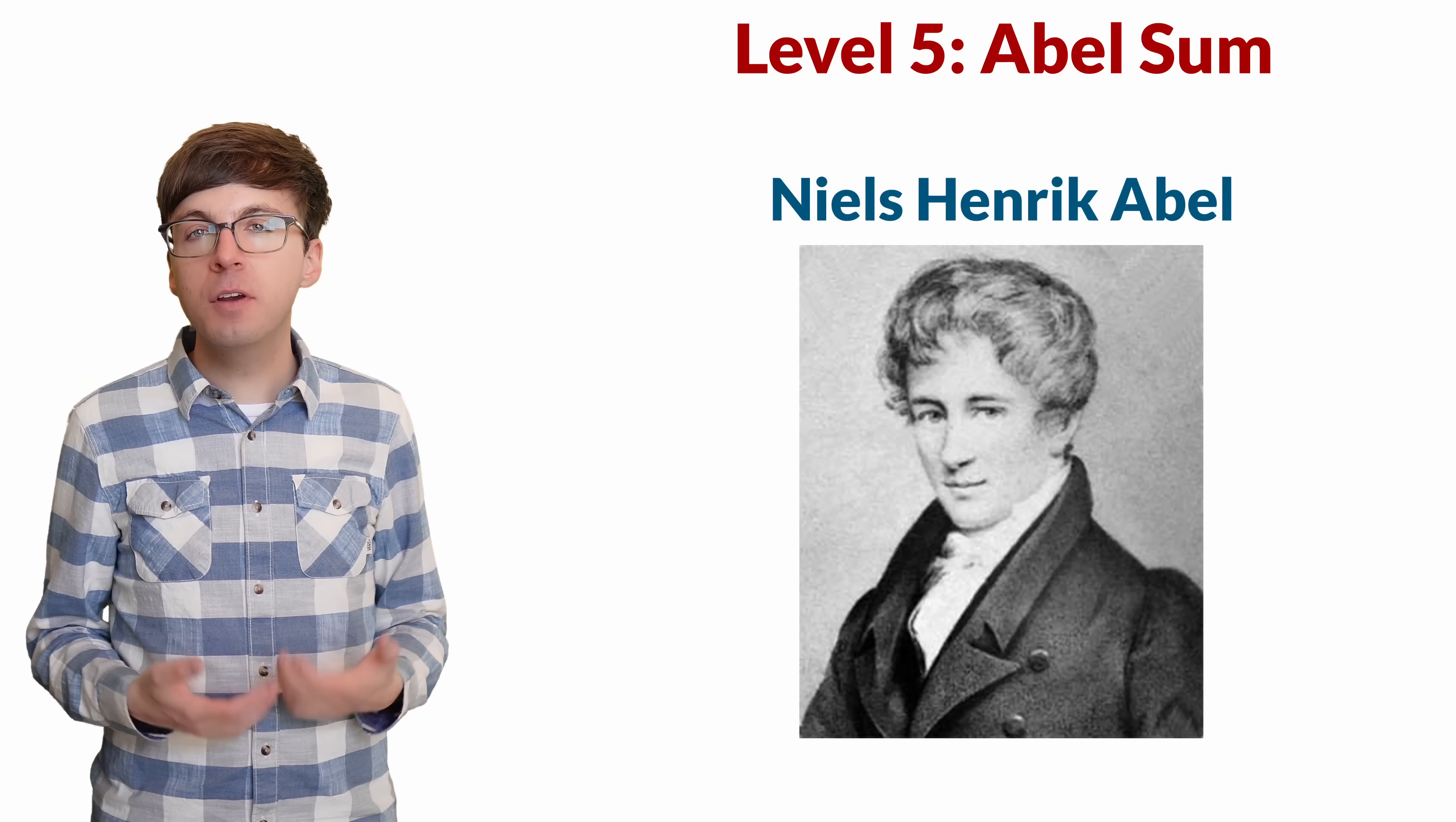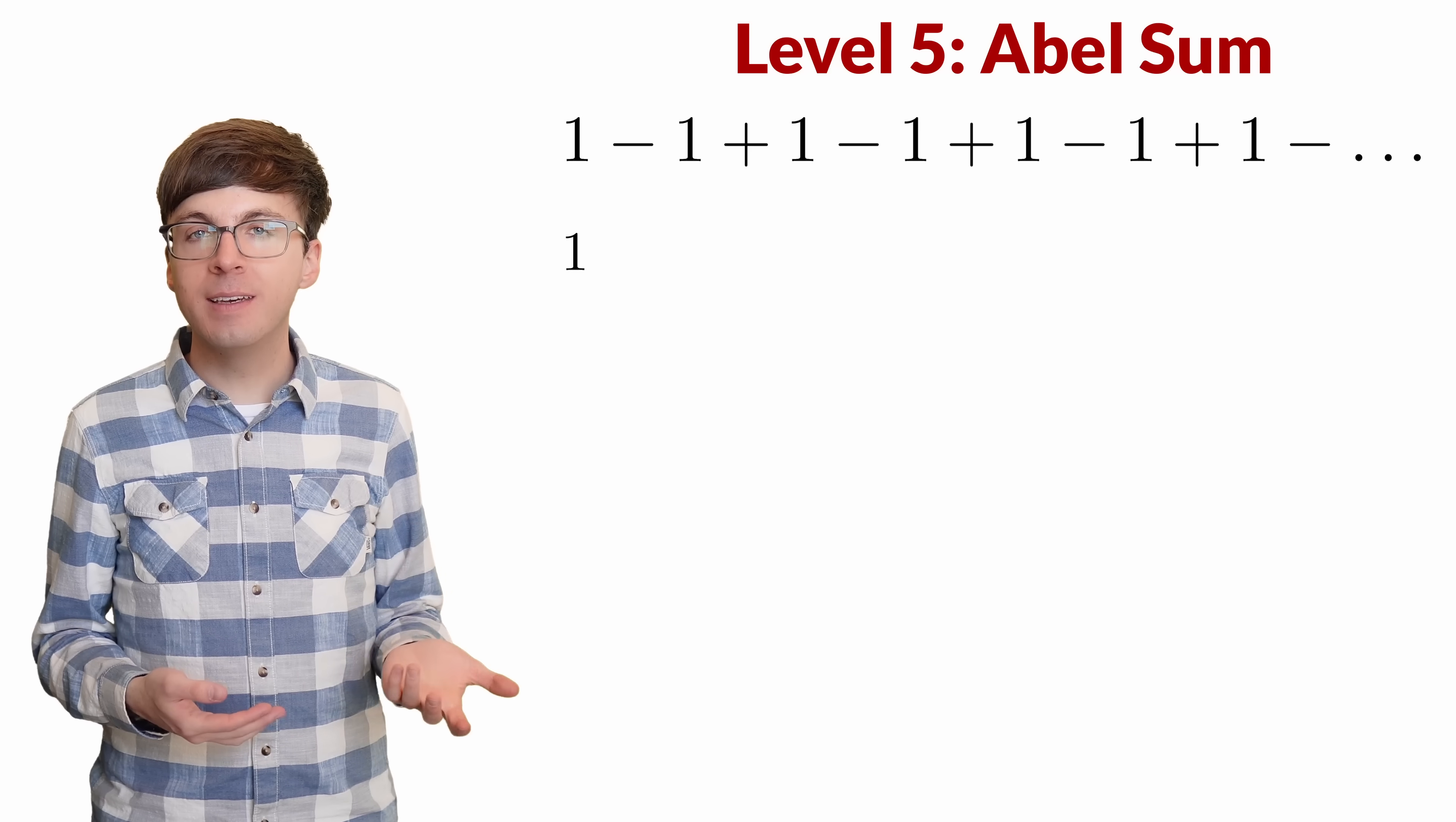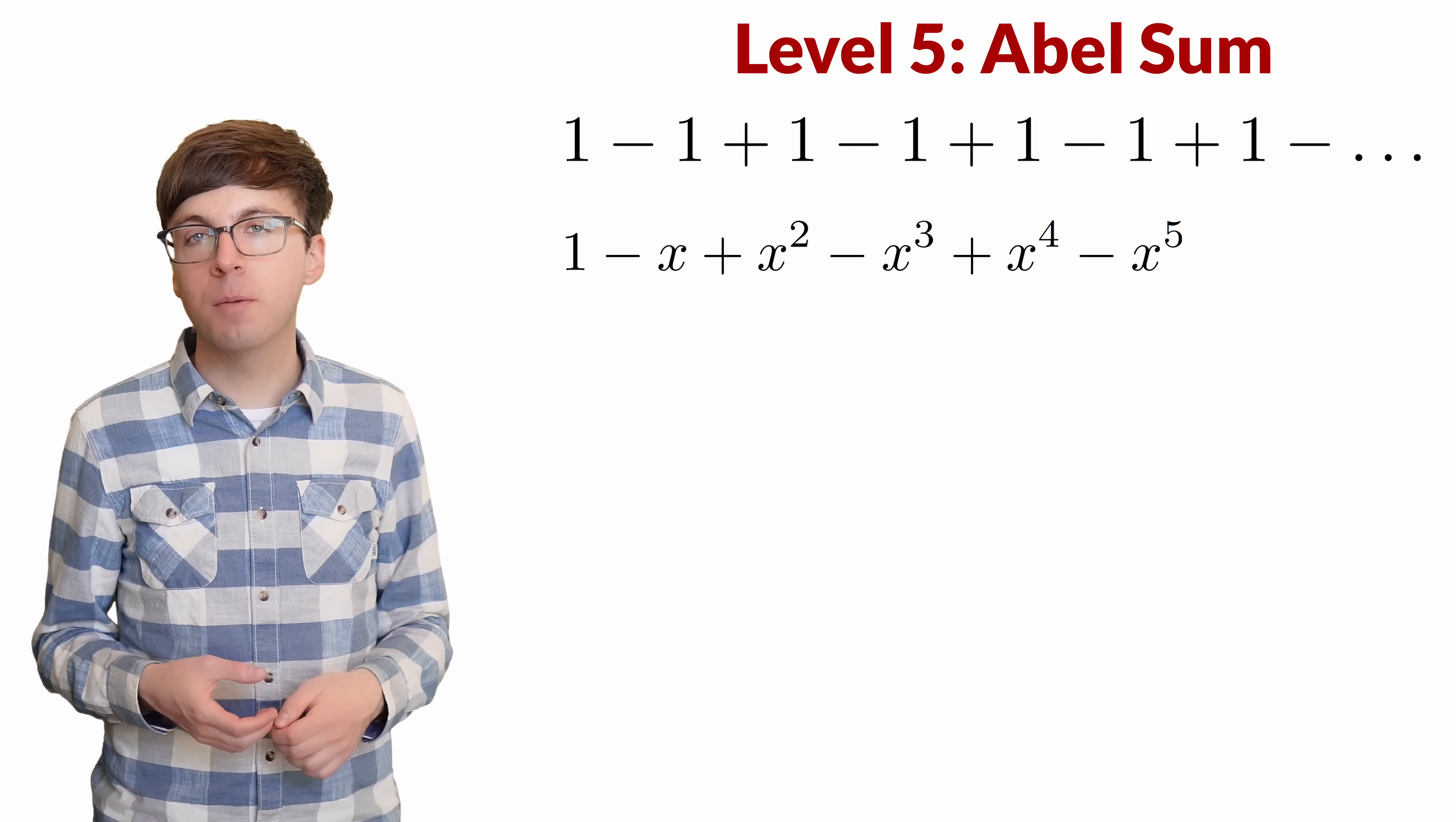For level 5, let's look at another summation method that can be applied to certain divergent series. This is called Abel's method. We convert our series to be a power series. The 1 will stay a 1, and then the negative 1 will become negative 1x. The next term is plus 1, which becomes plus 1x squared. And then we'll have negative x cubed, positive x to the fourth, and so on.